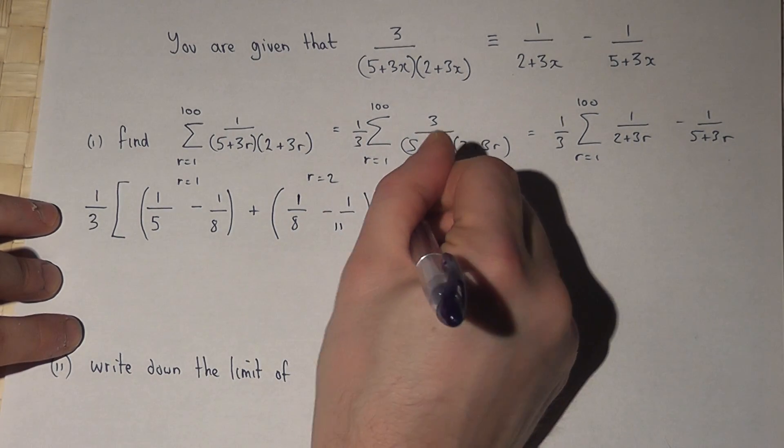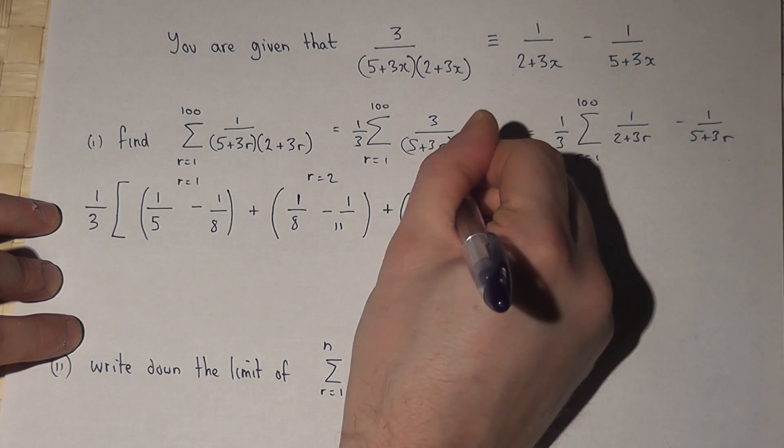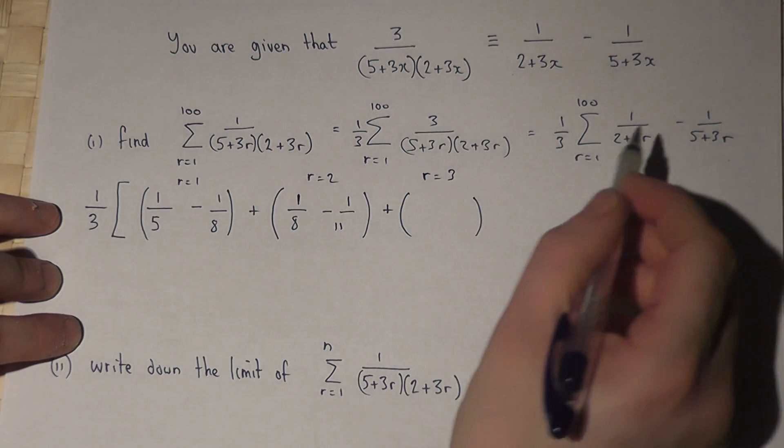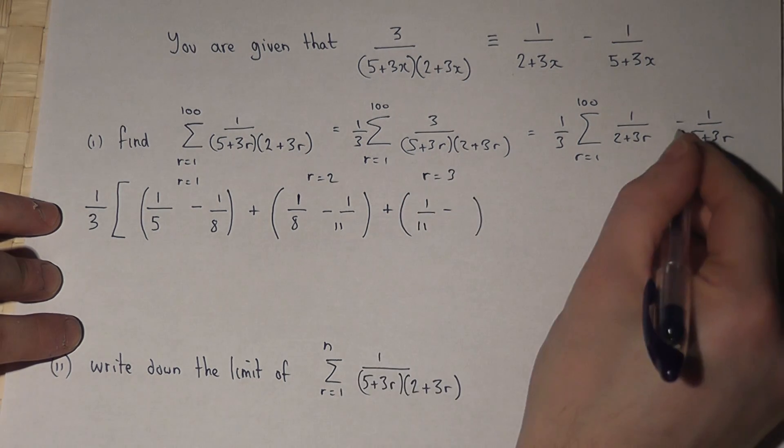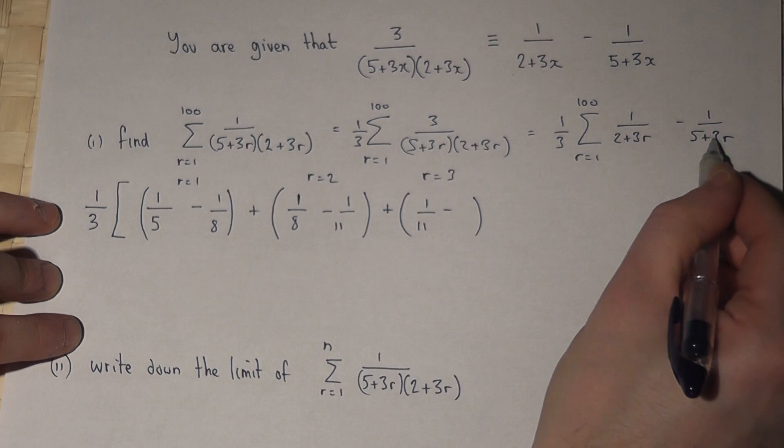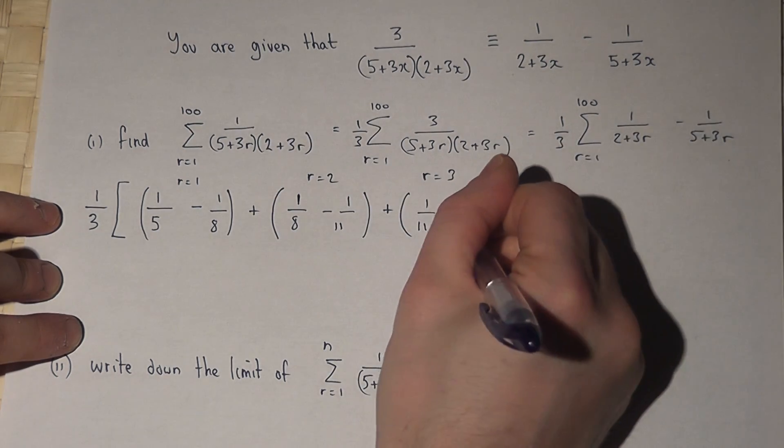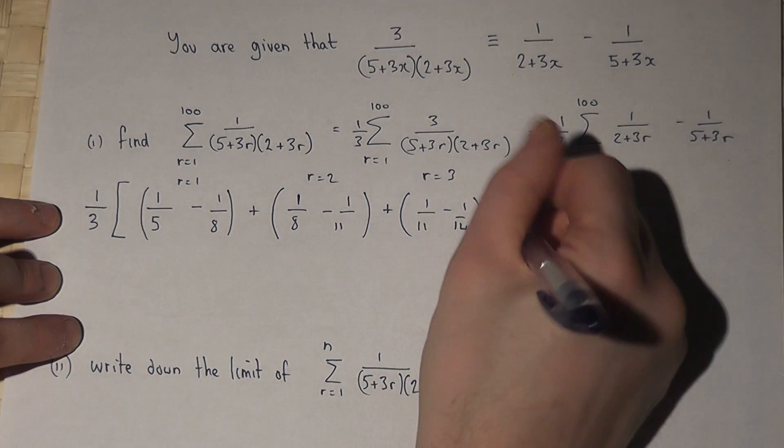If I then do the next one when r is 3, you will start to spot the pattern. When r is 3, 3 times 3 is 9 plus 2 is 11, take away 1 over 3 times 3 is 9 plus 5 is 14. And if I kept on going, the final term would be when r is 100.